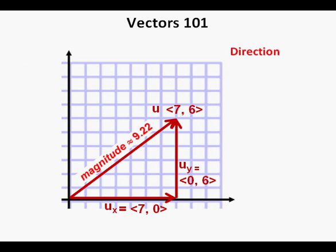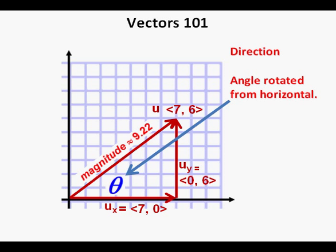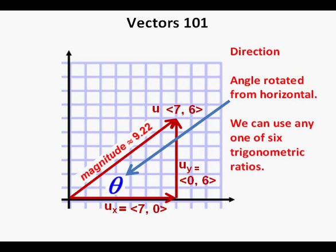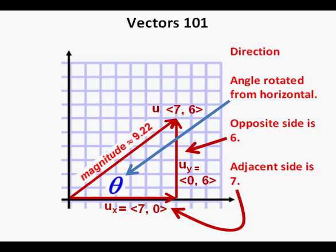Now we'll turn to the second characteristic of a vector — its direction. There are many ways to express the direction of a vector. To start, we'll call this angle, symbolized by the Greek letter theta, the measure of the angle rotated from the positive side of the x-axis. Since we have all sides of this right triangle, we can use any one of the six basic trigonometric ratios. We'll use the fact that the opposite side of angle theta is 6 and the adjacent side of the triangle is 7.